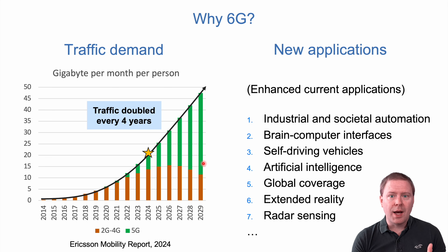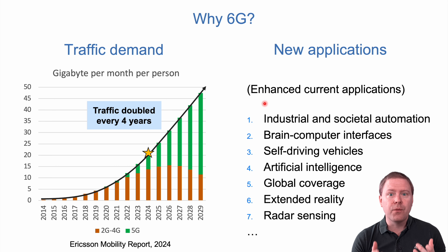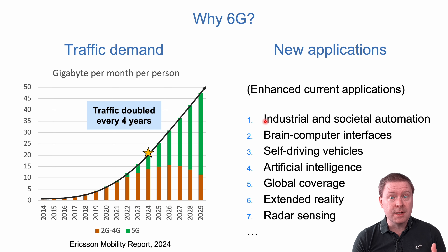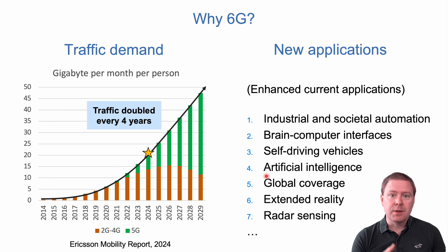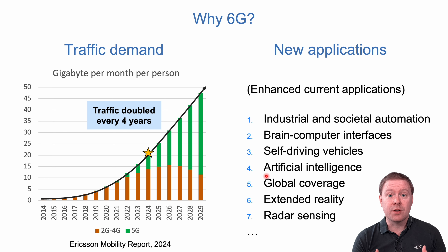In addition to traffic growth, there are also new applications emerging. All the existing applications will have higher performance requirements from users, requiring more data. Our industry and society are becoming more automated — what we call digitalization — creating more traffic and more demands for different kinds of slices supporting that automation. Brain-computer interfaces might happen, connecting your brain somehow. Self-driving vehicles haven't taken off yet, and AI over these networks will become very important for uploading data to train models and make decisions — all part of making our society smart.